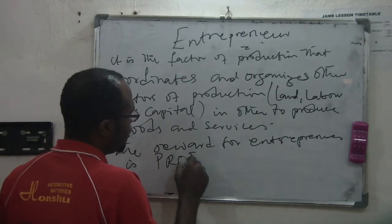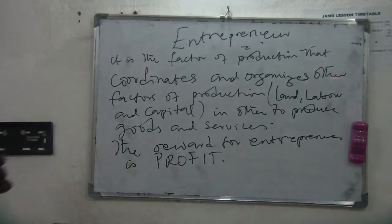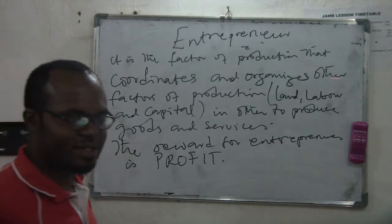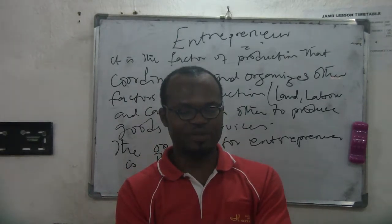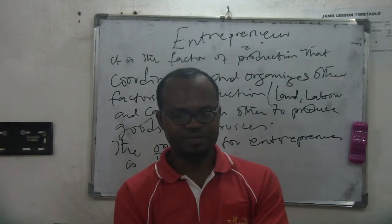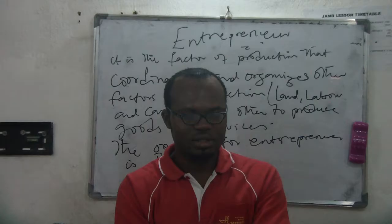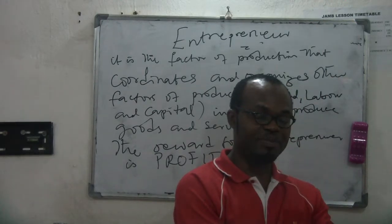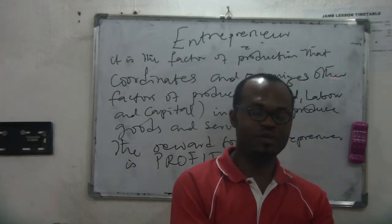So if you have land, labor, and capital but you don't have people that can manage it — people that can tell everyone what to do — you won't make profit. The entrepreneur bears the risk and takes major decisions of the business. He risks his capital in setting up the business with the aim of obtaining maximum profit, and coordinates, controls, and organizes the process of production in order to make maximum profit at minimum cost. The reward for the entrepreneur is profit.